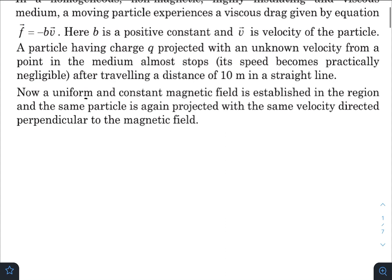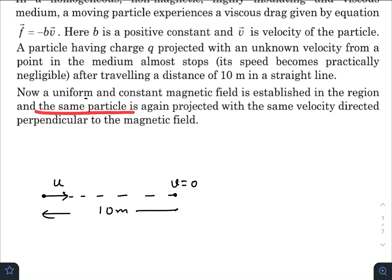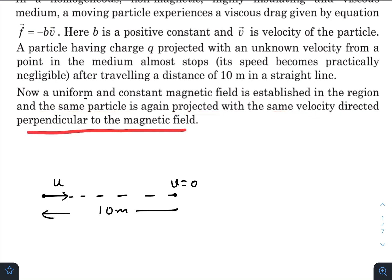Let us discuss this. There is a resistive medium and a particle of charge Q is thrown in a direction. After travelling a distance of 10 meters, this particle comes to rest due to the resistive force. Now, a uniform and constant magnetic field is established in the region and the same particle is again projected with the same velocity directed perpendicular to the magnetic field.